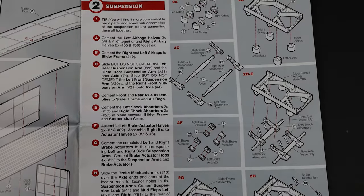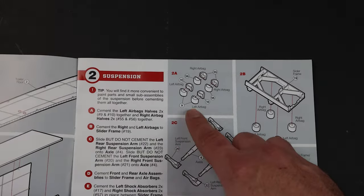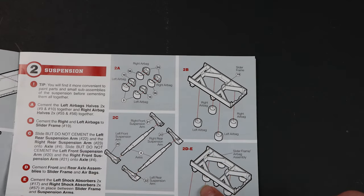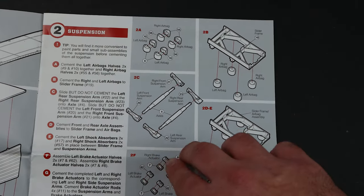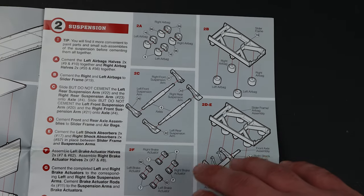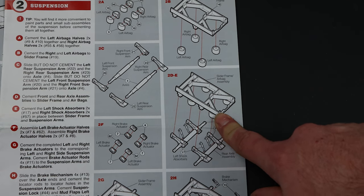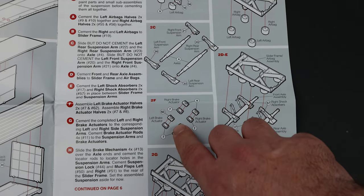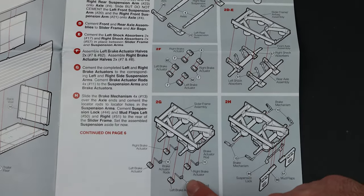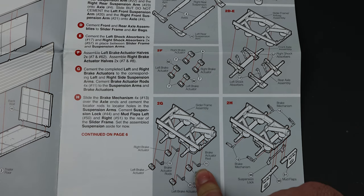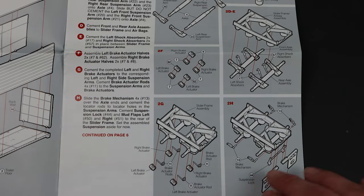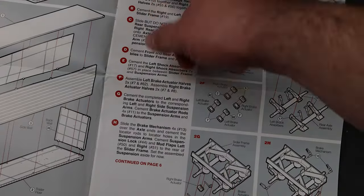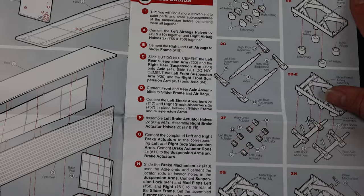Step two. Start out by building some airbags, attaching those to the tandem, the slider frame. Building up the suspension arms with the actual axles. Those then get fit to the slider frame airbag assembly. From there, you build the brake actuators, all four sets of them. And then those get added along with the actuator rod. Before you fit the mud flaps and the suspension lock, as well as braking mechanisms.